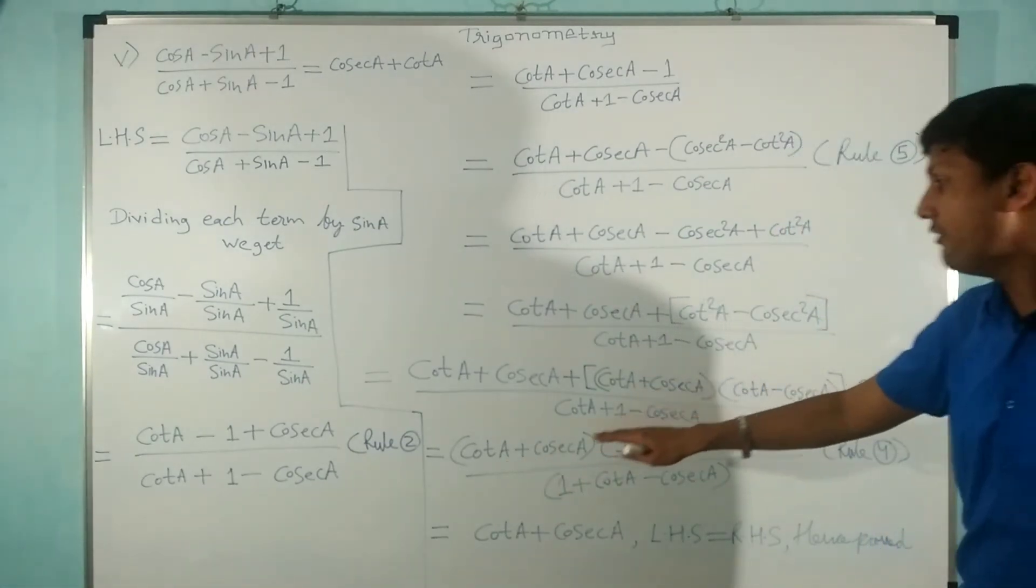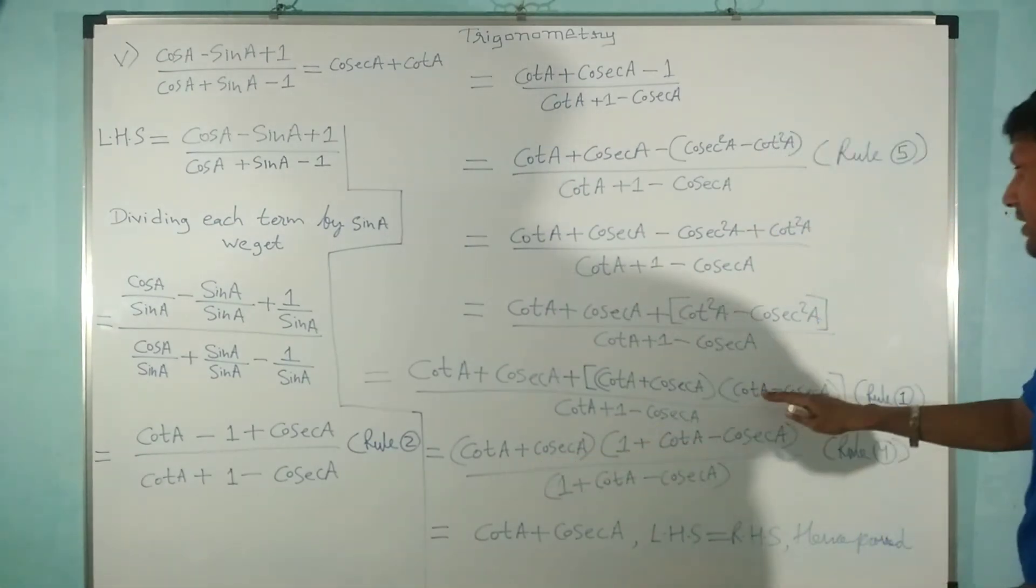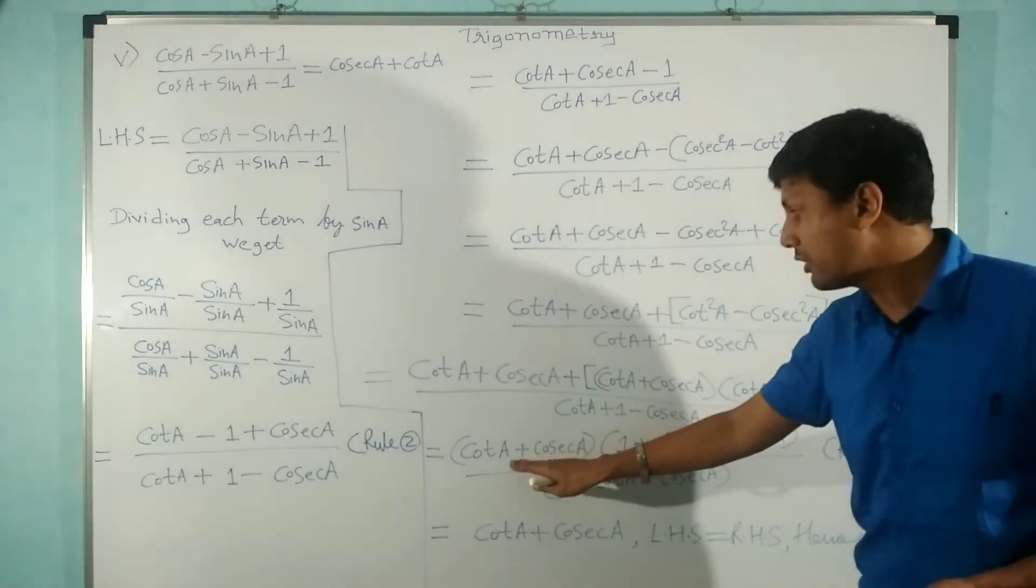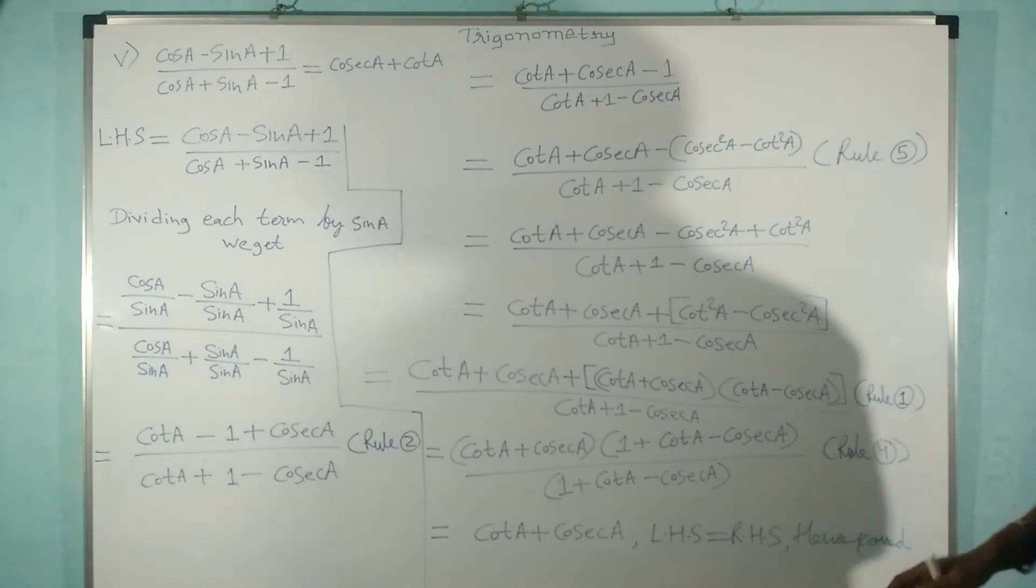When I multiply (cot A + cosec A) into one, I'll get this expression, and when I multiply (cot A + cosec A) into this, I'll get this whole expression. I took (cot A + cosec A) common.